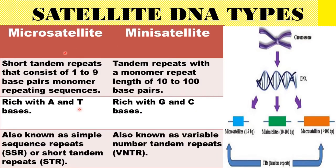A small chromosomal segment separated from the main body of the chromosome by a secondary construction is called a satellite. Satellite DNA is of three types: one is microsatellite, another is minisatellite, and the third is macrosatellite. However, the two most important types are microsatellite and minisatellite.